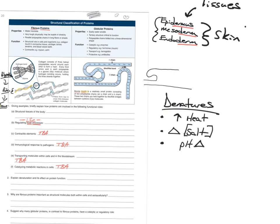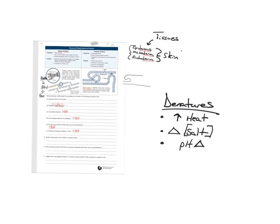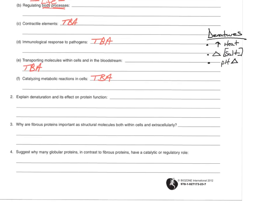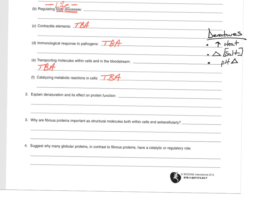You will retake this material in AP biology, college, and medical school. The better you learn it now, the easier the next ten years will be. Even if you're interested in being a lawyer, you'll have to take science in college. Biology makes the most sense to people — and it has less math.